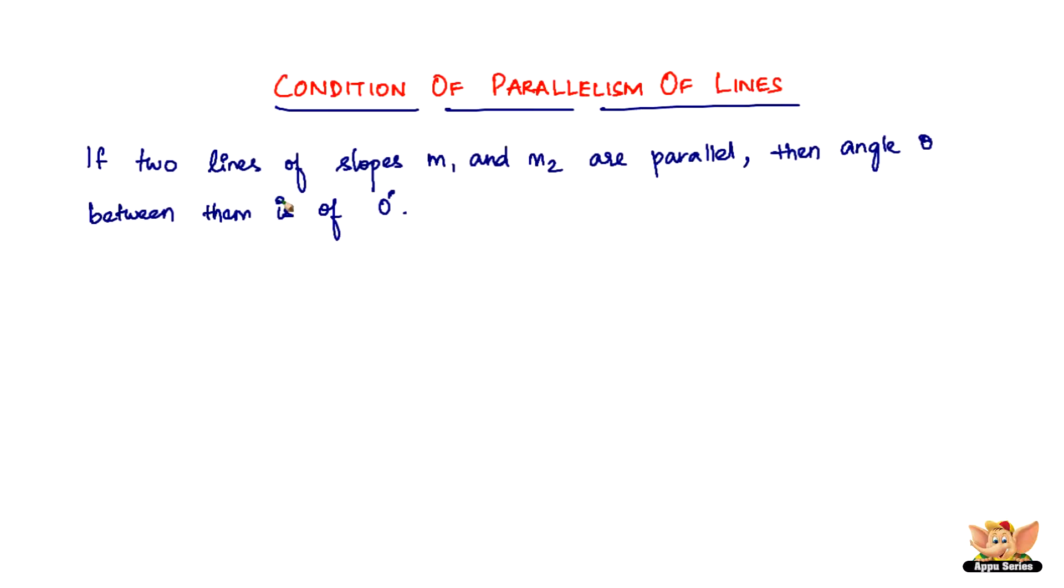Alright, here we've got the first statement regarding the condition of parallelism of lines. What it says is, if two lines of slopes M1 and M2 are parallel, then the angle theta between them is 0 degrees.